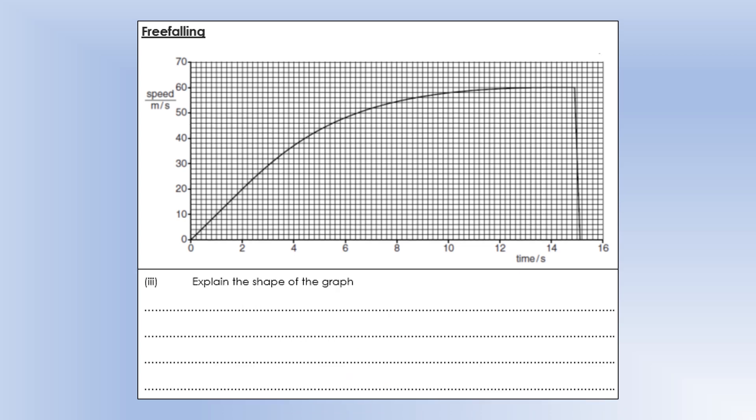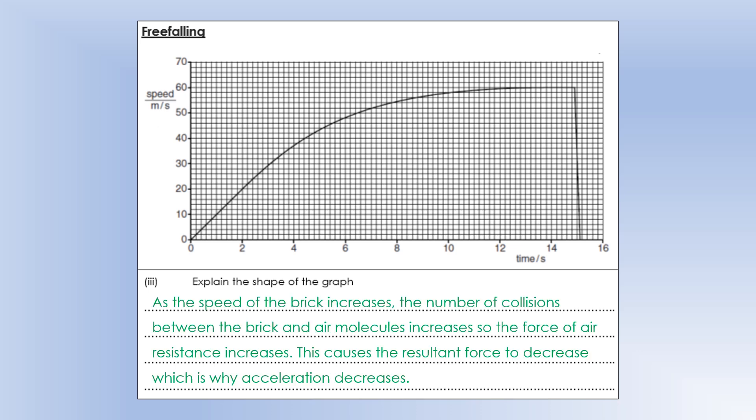So explain the shape of the graph. Well, what's actually happening is that as the speed of the brick increases, it's colliding with more air particles every second, and it's actually having harder collisions as well, because there's a bigger speed difference. And that's going to mean we've got a bigger air resistance.